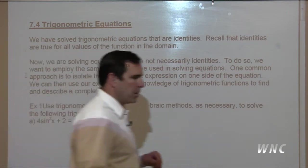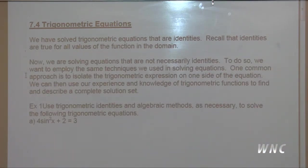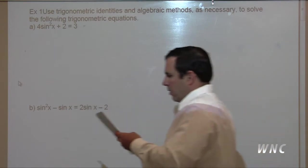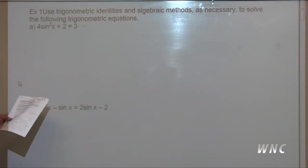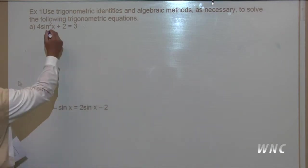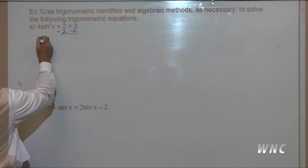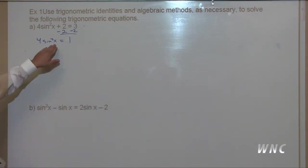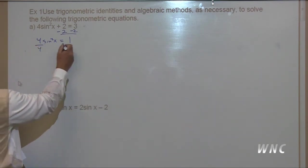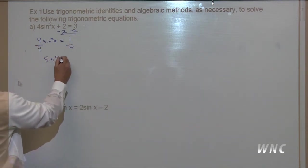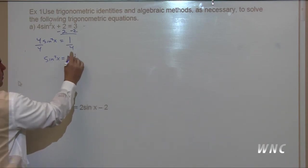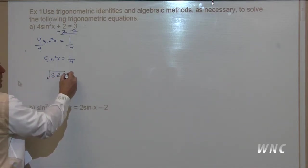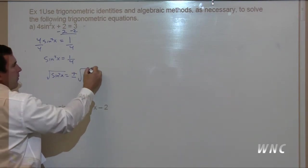Example one: four sine squared x plus two equals three. If I subtract the two from both sides, four sine squared x equals one. Now I'm trying to solve for x, so if I divide by four on both sides, I have sine squared x equals one-fourth. I'll take the square root — the square root of sine squared x is going to be plus or minus the square root of one-fourth.